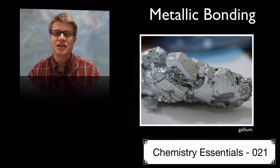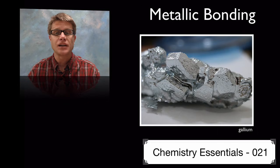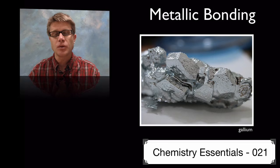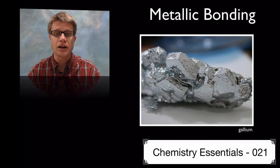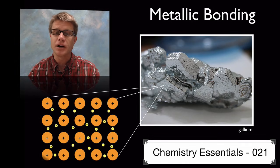Hi. It's Mr. Andersen and this is Chemistry Essentials video 21. It's on metallic bonding. And it's important that you understand that you can't have one metallic bond. You have to have a number of atoms together sharing their electrons and therefore sharing their bonding.